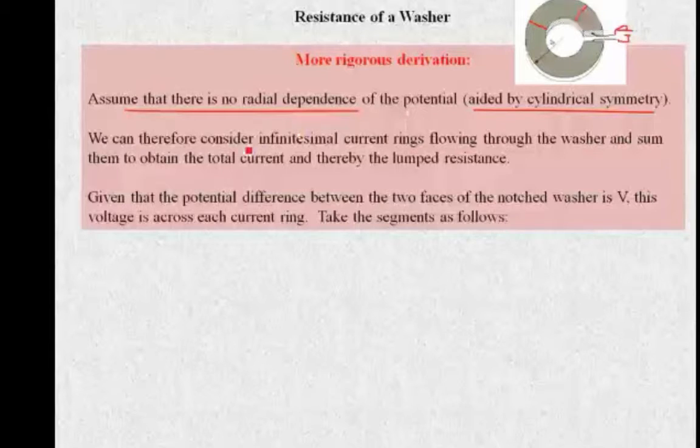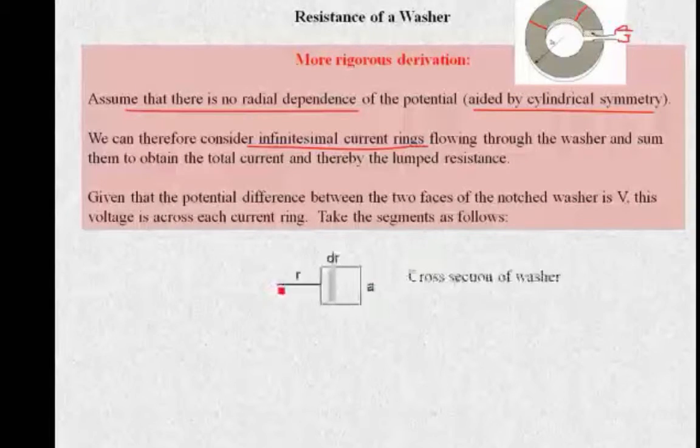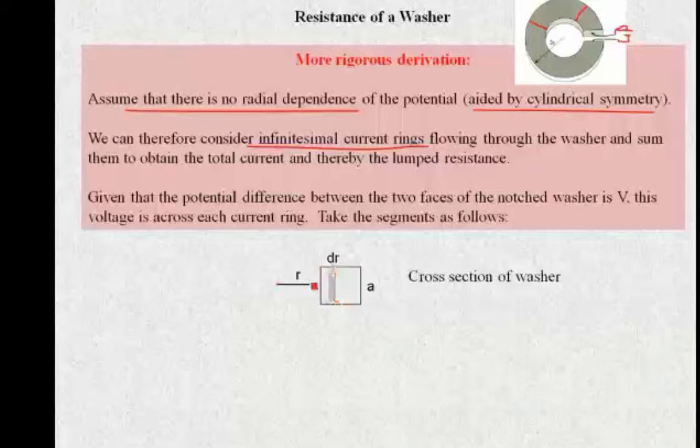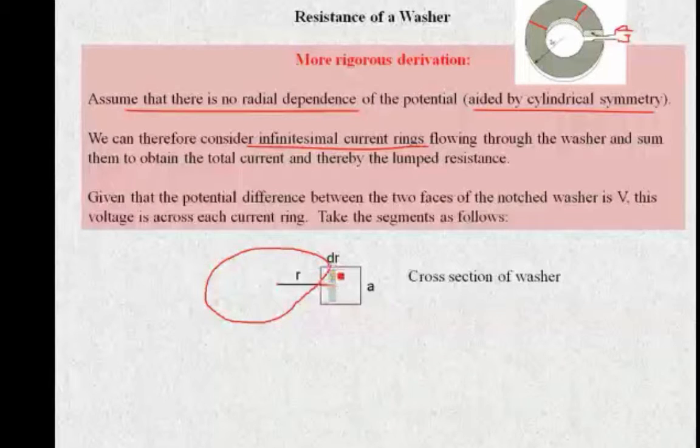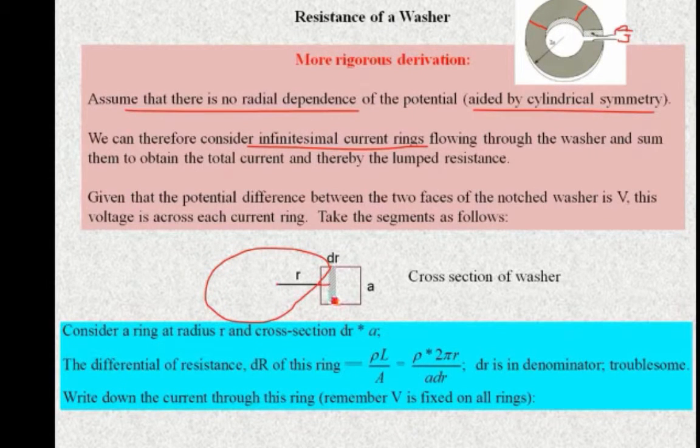So what we're going to do is consider infinitesimal current rings that are flowing through the washer and then sum them up. And I'll show you what I mean by that. Given the potential difference between these two faces, let's call that V, then the voltage is across the current ring. And so we take the segments as follows. So we have the cross section of the washer and we take a slice of width dr and height a at a radius r. So consider the distance from the center to this element here. So realize this is basically going around the ring like that and there's another one up here, another down here. If we then look at this in terms of a cross section, the cross section of this little element is just the width times the height, so dr times a.